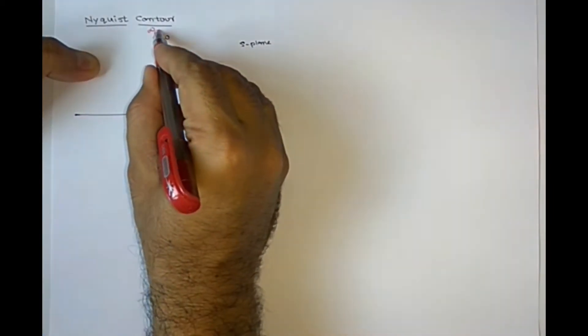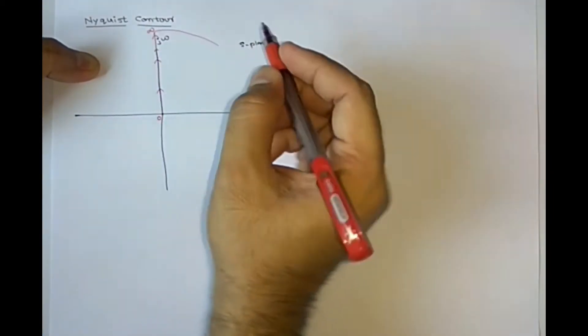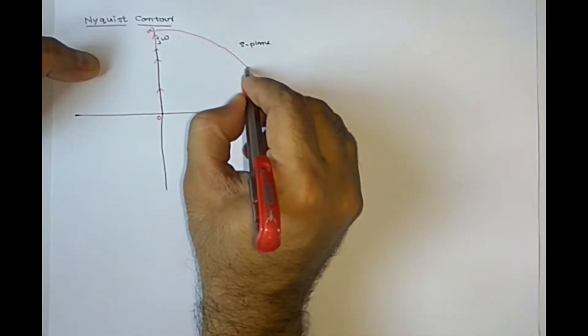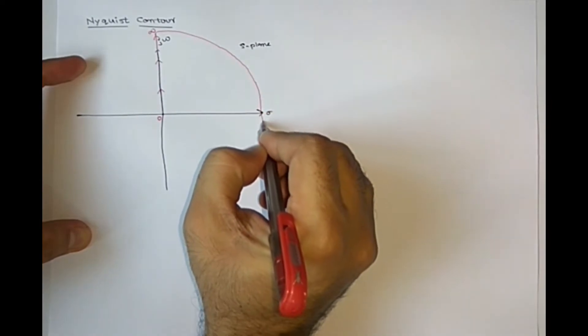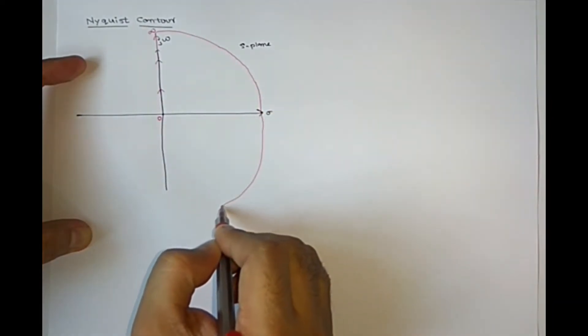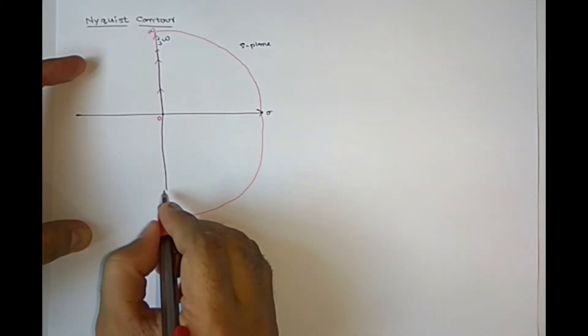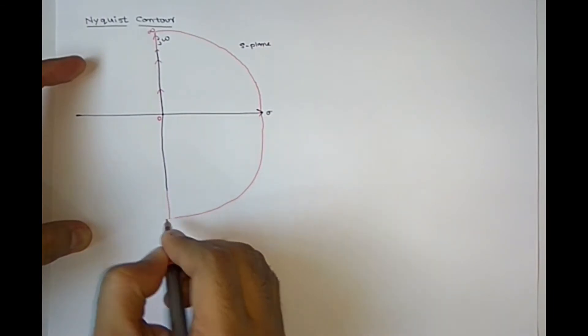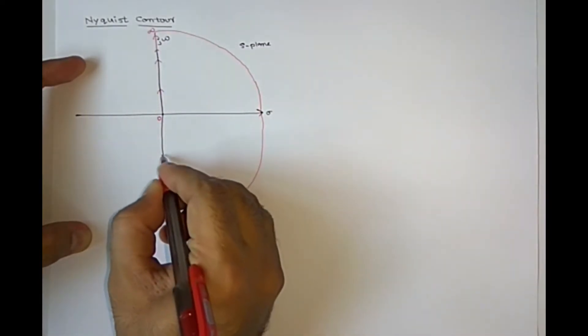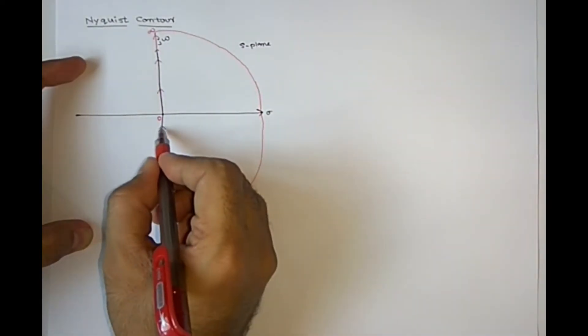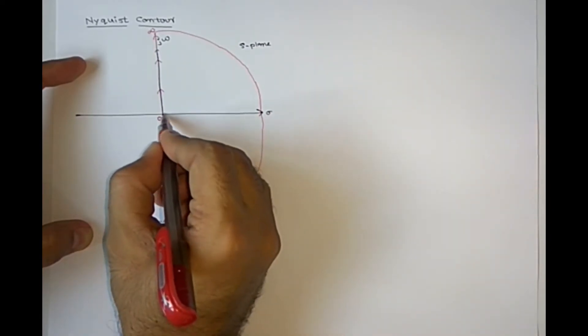Then this infinity circle, radius is infinity. So this infinity, you need to reach to negative imaginary axis, minus infinity. And you need to travel with negative imaginary axis to zero, origin.